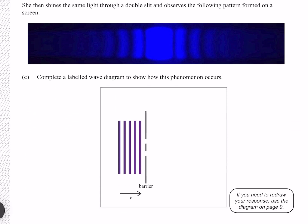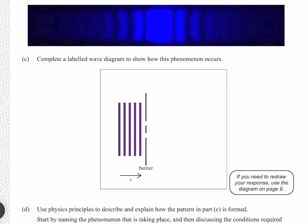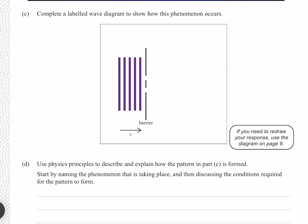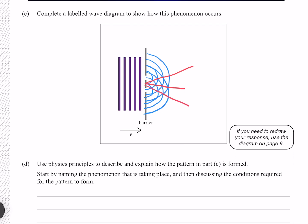She then shines the same light through a double slit and observes the following pattern formed on a screen. Complete a labeled wave diagram to show how this phenomenon occurs. So we now need to draw a 2D interference pattern, which is one of the more annoying and finicky diagrams to draw. I'm going to try my best. Where we have an antinodal line here, and also here and here, and nodal lines in between.